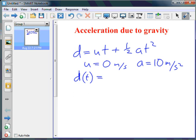That expression UT, you needn't worry about that in this very simple example. Because since U, the initial velocity is zero, UT is zero. Since A is equal to 10, a half times 10 is 5. So D, in terms of T, is simply equal to 5T squared.